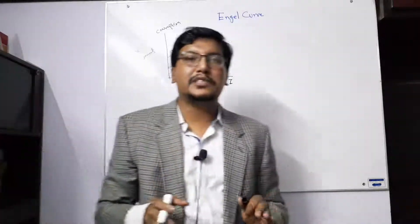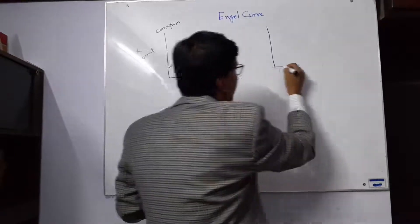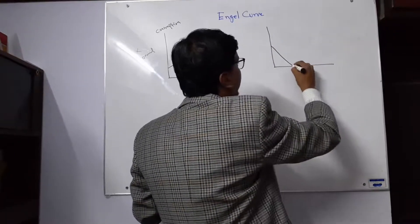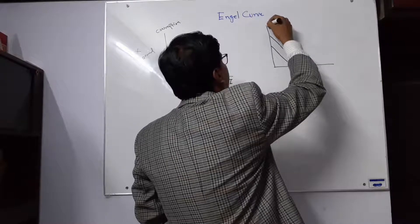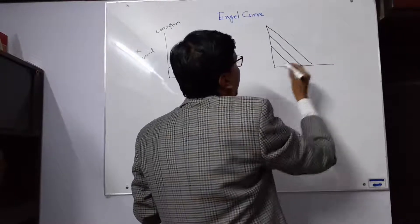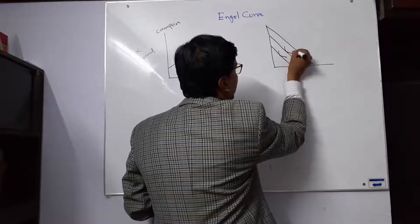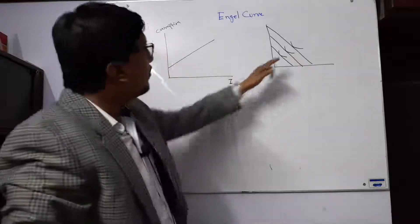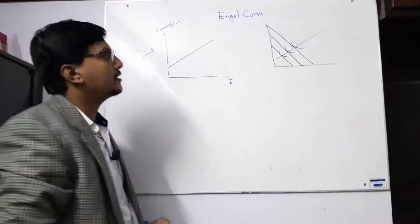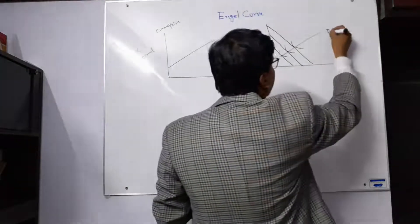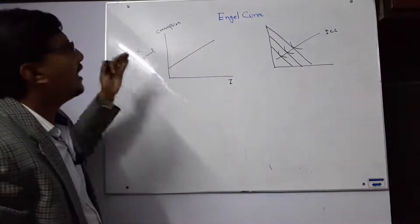This is what we covered in the income consumption curve. We need to know how the Engel curve can be drawn from the income consumption path. If income is constantly increasing, the budget line shifts parallel. The equilibrium points shift accordingly, giving a positively sloped curve. This income consumption path is basically the Engel curve.